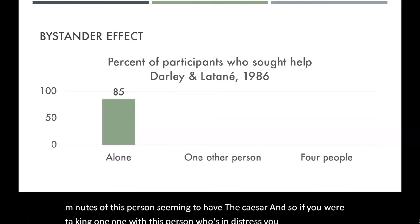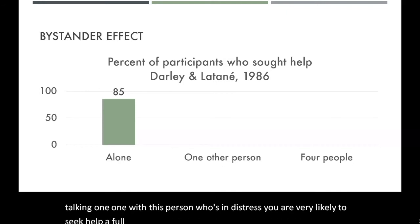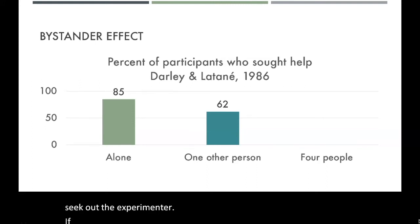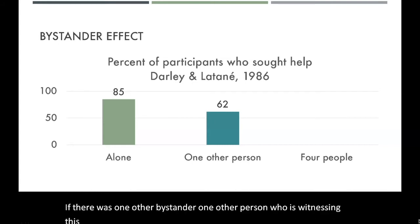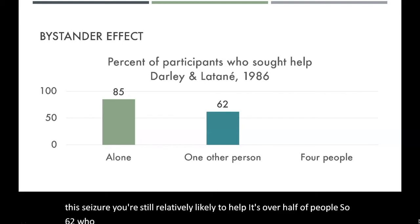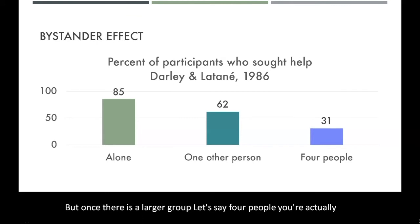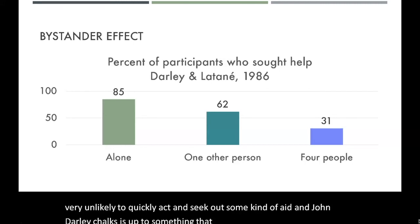If you're talking one-on-one with the person in distress, you're very likely to seek help — a full 85% of those participants would quickly get up and seek out the experimenter. If there was one other bystander witnessing the seizure, it's still over half of people — 62% — who quickly sought aid. But once there is a larger group of four people, you're actually very unlikely to quickly act. And John Darley chalks this up to something he calls diffusion of responsibility.